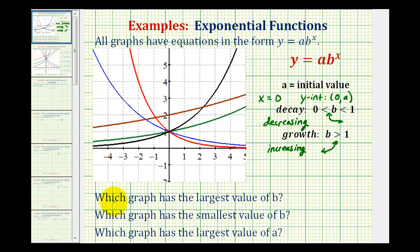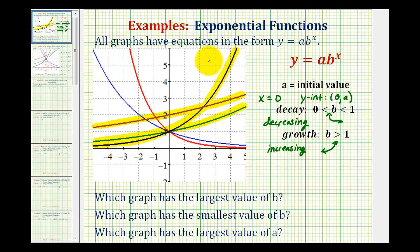Now let's go back and take a look at our questions. We want to know which graph has the largest value of b. Remember, b determines whether we have exponential growth or decay. If we want the largest value of b, we only want to look at the graphs that are exponential growth or increasing functions, which would be this black function here — it's increasing, so b is greater than one — as well as the brown graph and the green graph. The graph that's increasing the fastest would have the largest value of b, which in this case would be the black function, because it's going uphill the fastest.